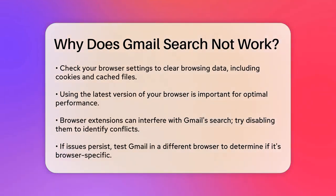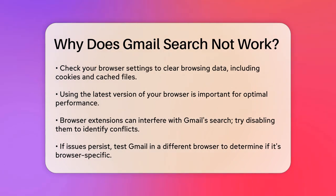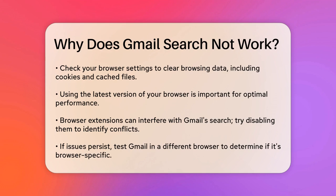Gmail's search algorithm itself can be a culprit. It may struggle with complex or nuanced search queries, leading to missed results. Using simpler search terms can help. For example, instead of using multiple search operators, try breaking down your search into simpler parts.